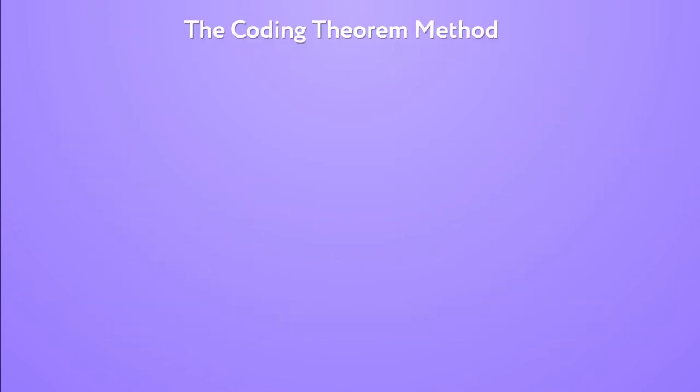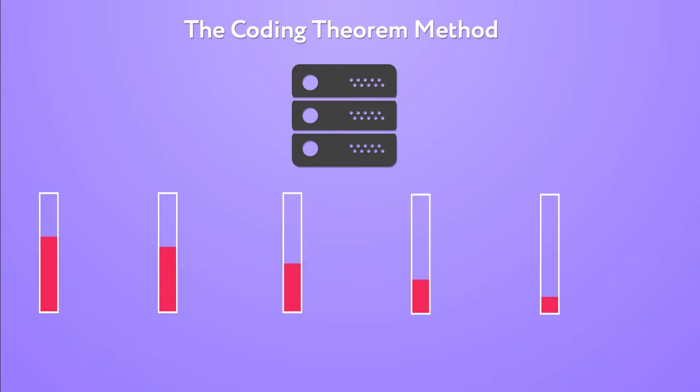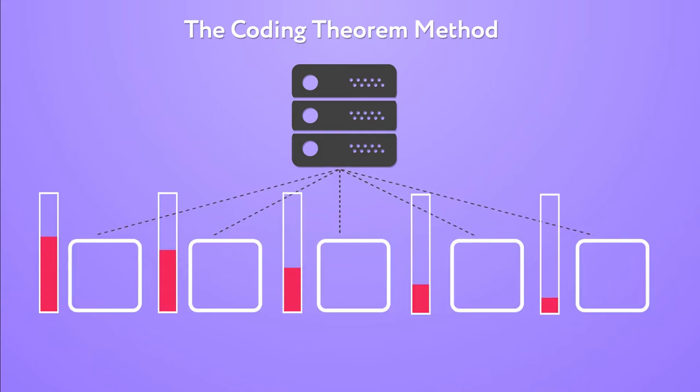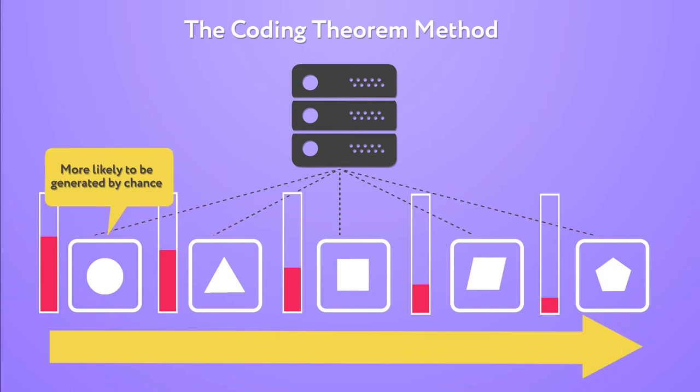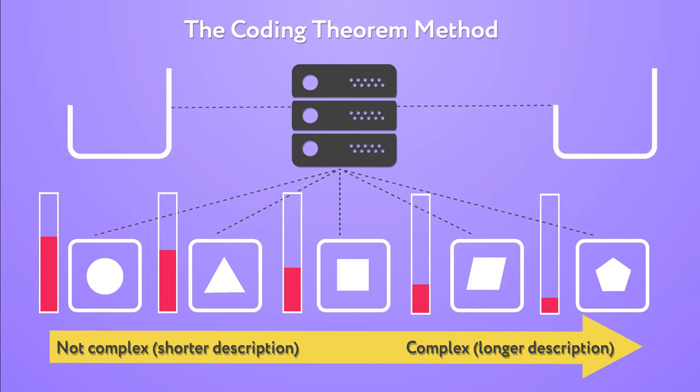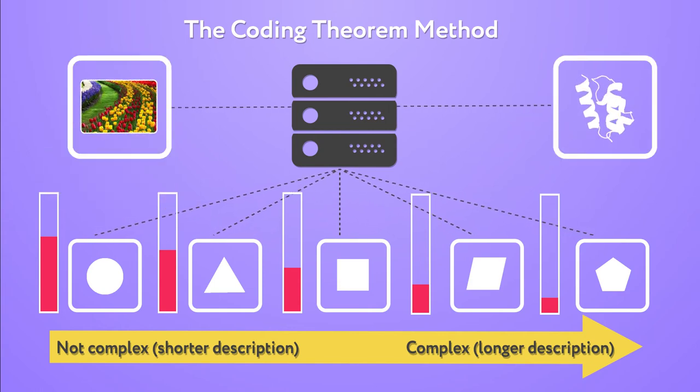What we do then is to run a huge number of small computer programs in order to count the number of times that an output is produced. From this, we were able to estimate how likely an object is to be produced by a computer program building a distribution. This distribution helps us to characterize objects and device applications that could not have been conceived before.